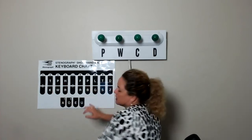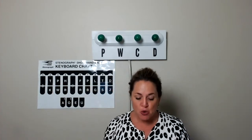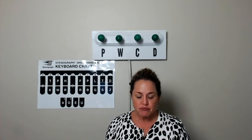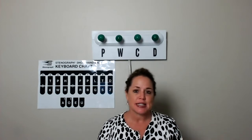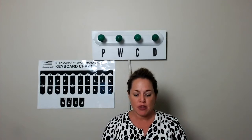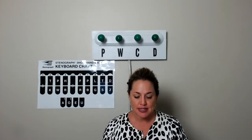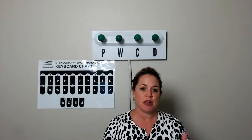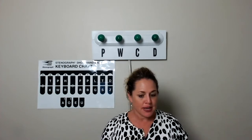You want to know these briefs so well that when you hear them, you write them immediately without hesitating. When you hear 'the,' you write initial T, final T. 'Is' — initial S. You want to know them that quickly starting from Lesson 1 all the way through 19 and beyond. As we progress through the lessons, you want to know every single brief just as well as you knew them back in Lesson 1.